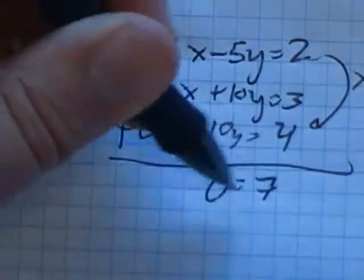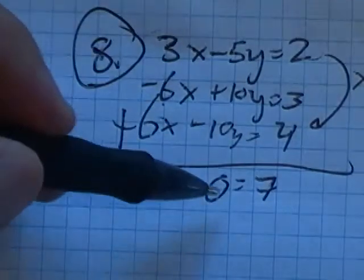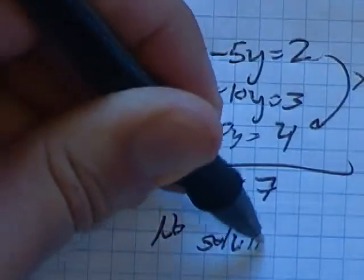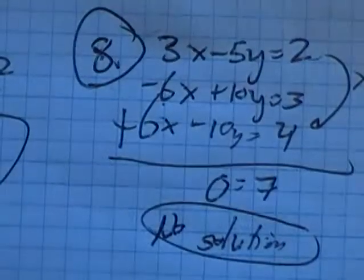Three plus four is seven. I end up with zero equals seven. So that's a statement that's not true. So that means that there is no solution to this system.